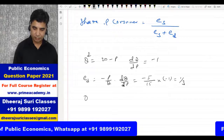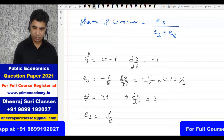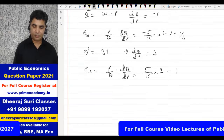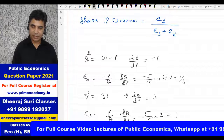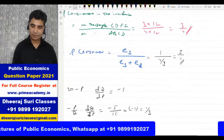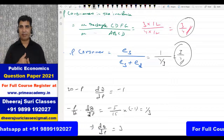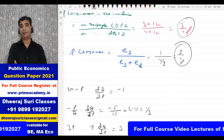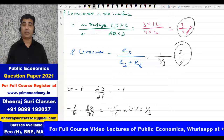Supply function QS = 3P, so dQ/dP = 3. Elasticity of supply = (P/Q) × (dQ/dP) = (5/15) × 3 = 1. So Es = 1. Consumer's share = Es / (Es + Ed) = 1 / (1 + 1/3) = 1 / (4/3) = 3/4. This confirms the answer. The more elastic side bears less burden; the less elastic side bears more.